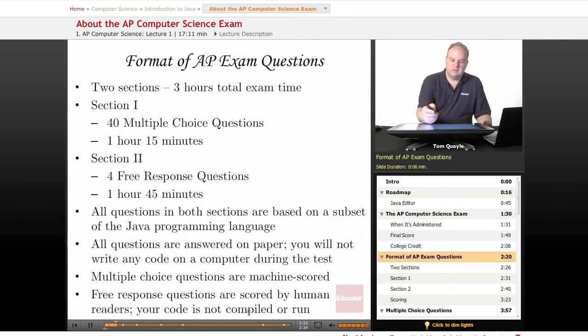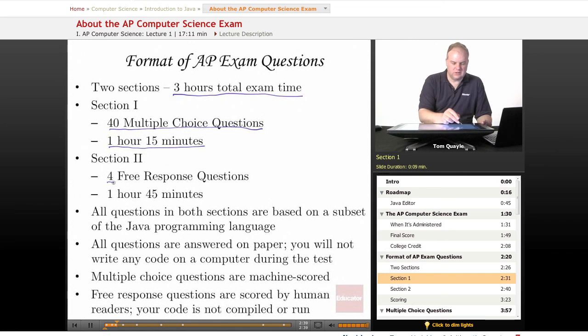There are two sections on the AP exam. You have a total of three hours to do both sections of the exam. Section one is 40 multiple choice questions and you have one hour and 15 minutes to complete those. Then you'll get a short break between the sections, and section two is four free response questions, which some people refer to as essay questions. You have one hour and 45 minutes to complete those questions.